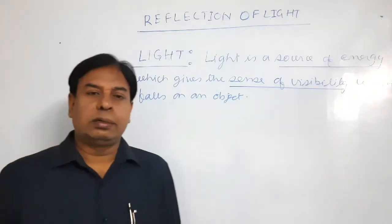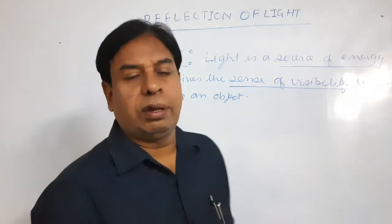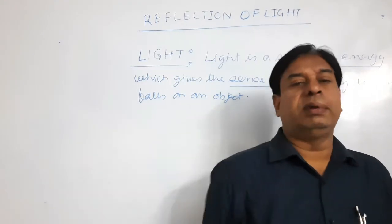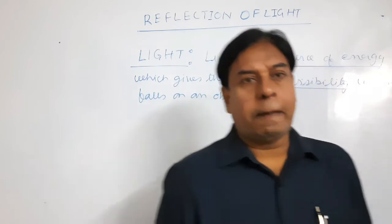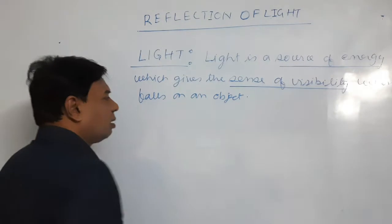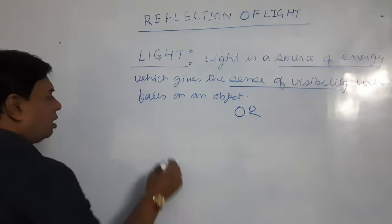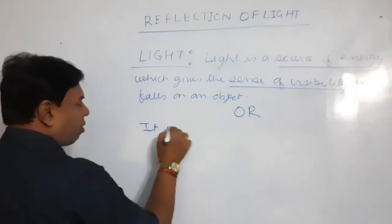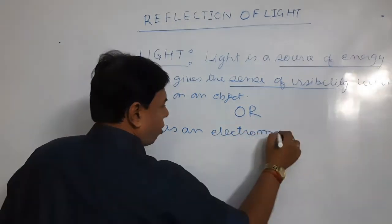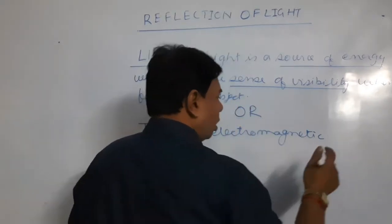Our eye receives light from the object, and that object becomes visible to us. In a different way, we can define light as an electromagnetic wave.